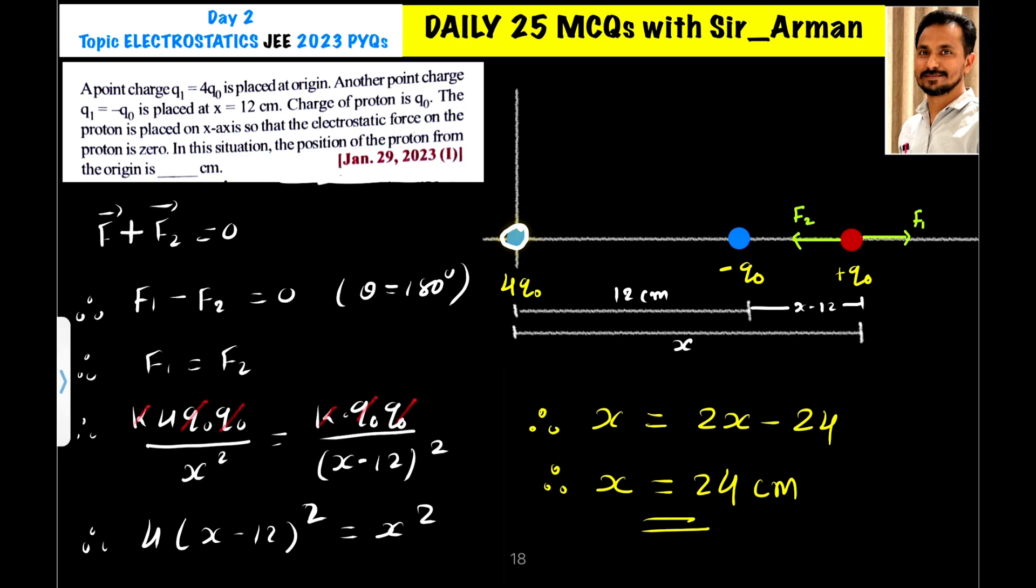Let us assume for these two charges in the system, if I place the proton somewhere here between the two charges, then what will happen? This positive charge will repel and push this proton towards the right side, whereas this negative charge will attract this proton and pull it towards the right.